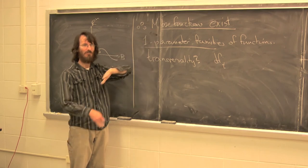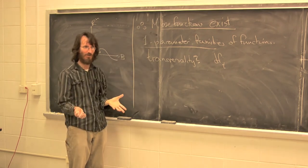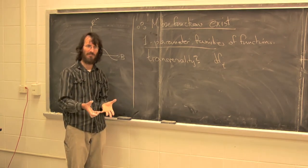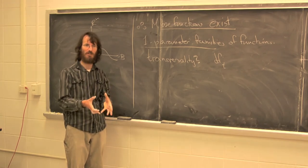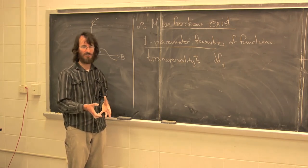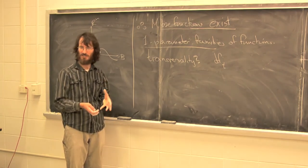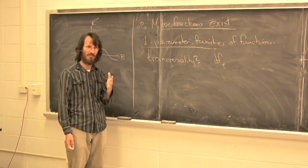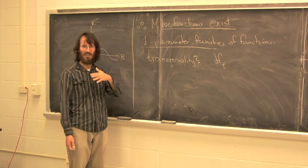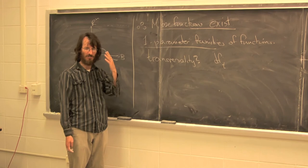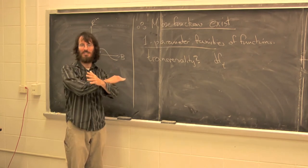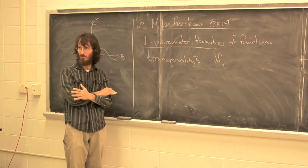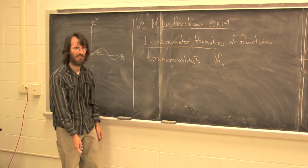The other thing that follows immediately from this transversality interpretation of the Hessian is that critical points are isolated. If you have the Morse lemma, that implies critical points are isolated because we have a local model. Also, because it's a transverse intersection of two n-dimensional things inside a 2n-dimensional space, the intersection is 0-dimensional, so the critical points are isolated.